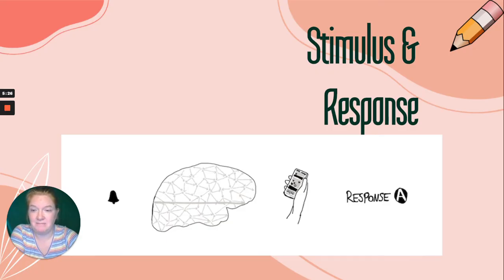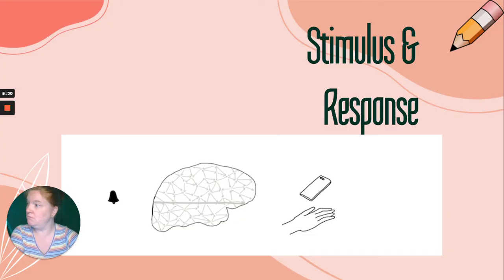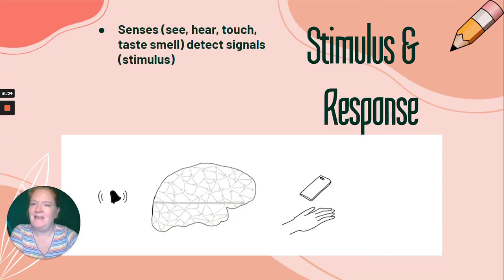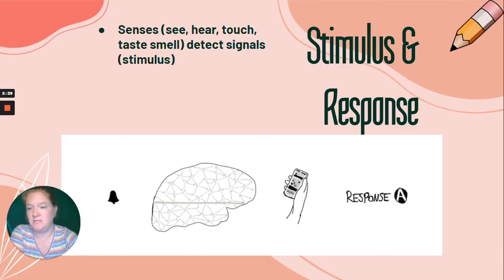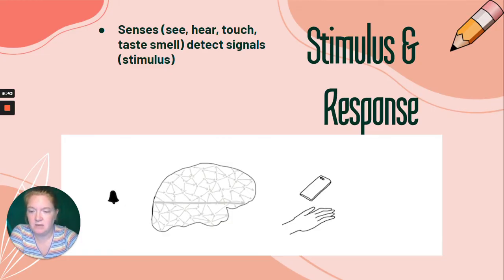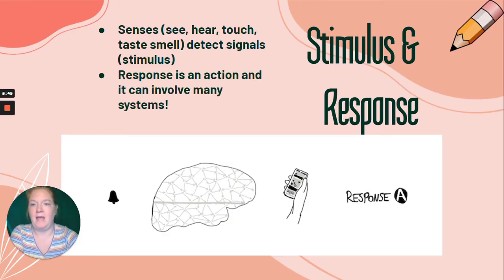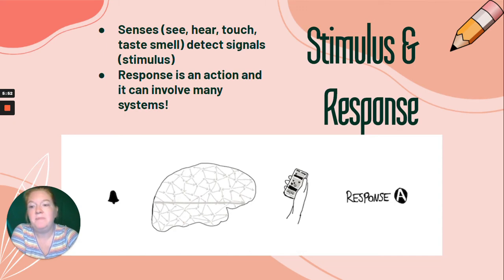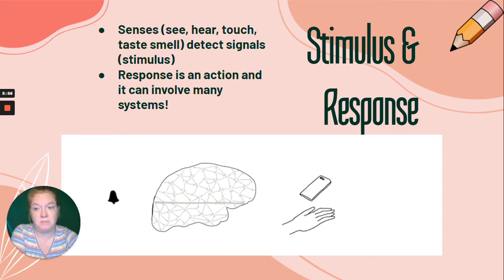Now, stimulus and response — here's one that's probably pretty familiar. You hear a notification and you check your device. A stimulus involves the senses: we see it, hear it, touch it, taste it, smell it. Senses detect signals, or a stimulus. The response is an action, and it can involve one system or many systems. The stimulus can be internal or external.